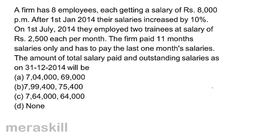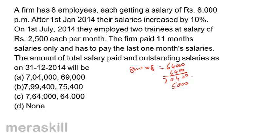8 employees were getting 8,000 each, but salaries increased by 10%. So 8,000 into 8 employees was 64,000, and now the salary is 64,000 plus 6,400, that is 70,400 per month. On 1st July, they employed 2 trainees at 2,500 per month, so 5,000 per month. The trainees work from July to December — that's 6 months — but the firm paid only 11 months' salary, so we take 5 months for trainees and 11 months for the original employees.